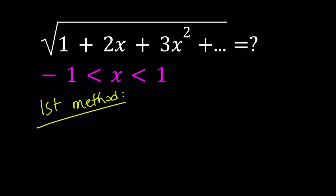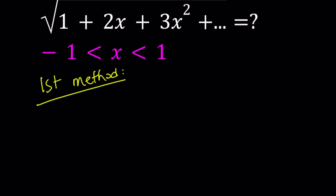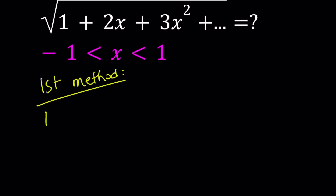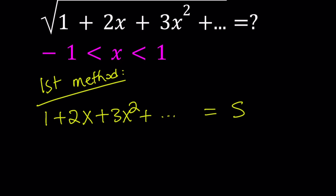Our first method is kind of interesting and we use this back and forth for infinite series or sums like this. Suppose we have the following sum: 1 plus 2x plus 3x squared — let's go ahead and call this S, for sum.